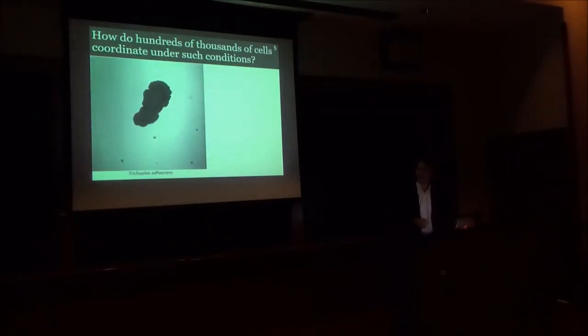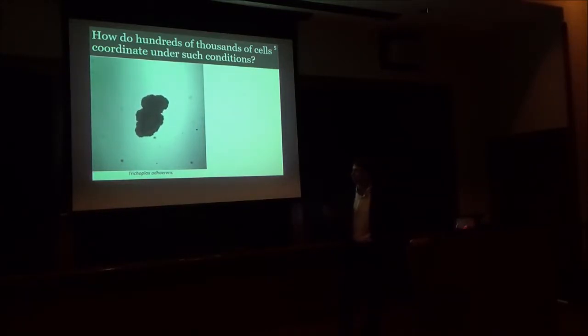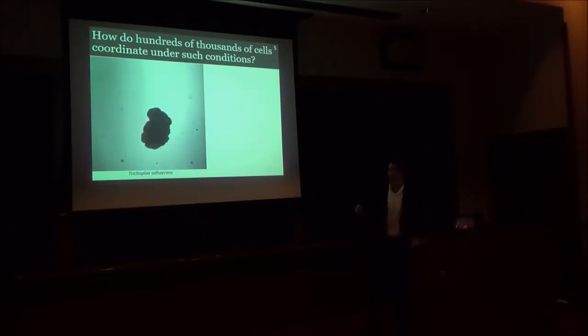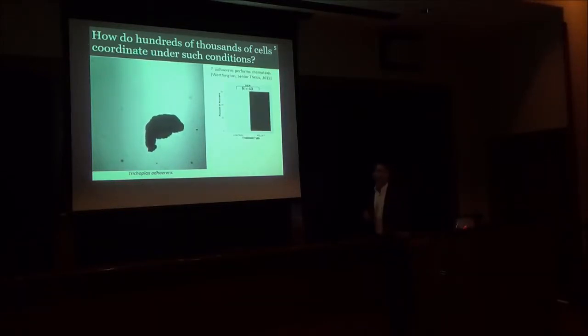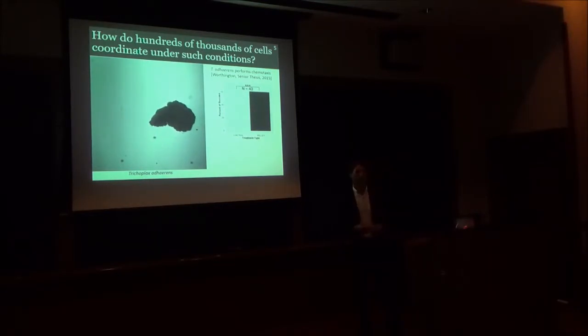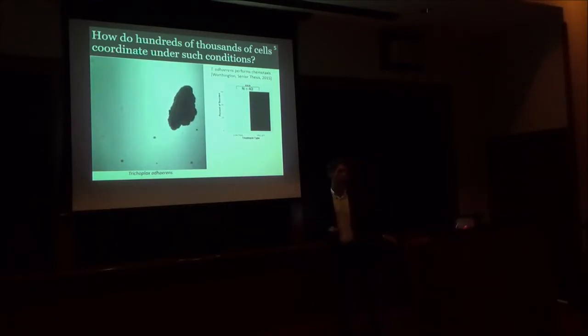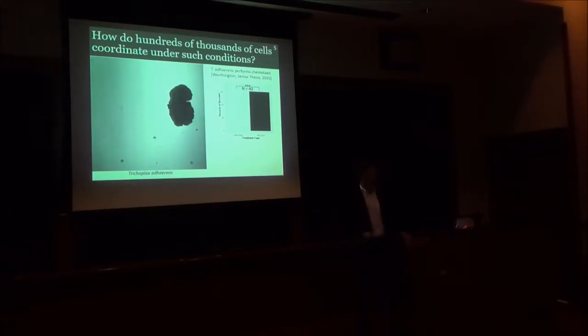And that important coordination problem is motility. These animals must navigate their environments hunting for their algal prey in spite of not having a head, not having a nervous system, not having any muscles or any fixed body plan. They're just a pancake of cells drifting around on the bottom of the ocean. In work that I did with a former undergraduate here, Leah Worthington, as part of her senior thesis, we demonstrated that placozoa are able to perform chemotaxis towards a target such as a food pellet, which they would never be able to find if it were just a dummy target at that same distance.